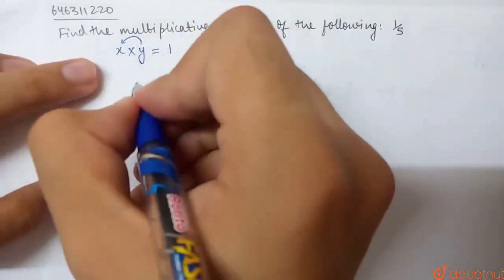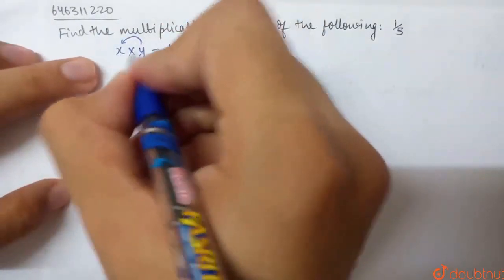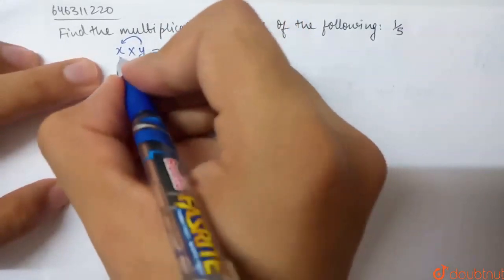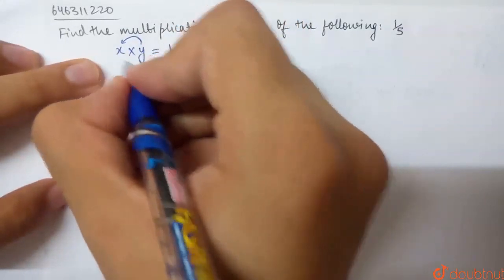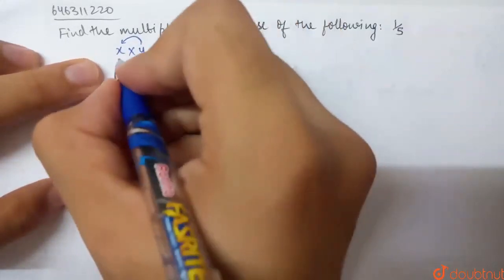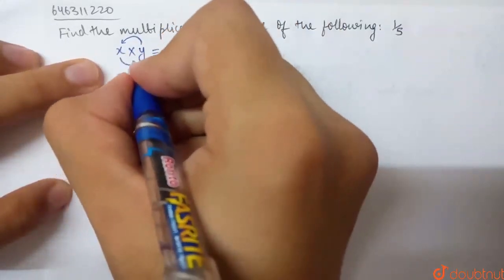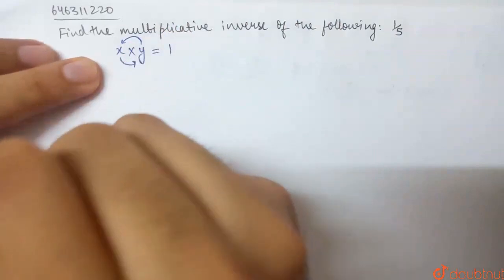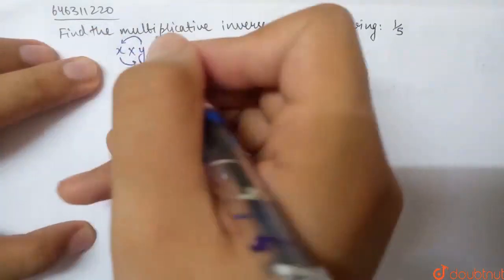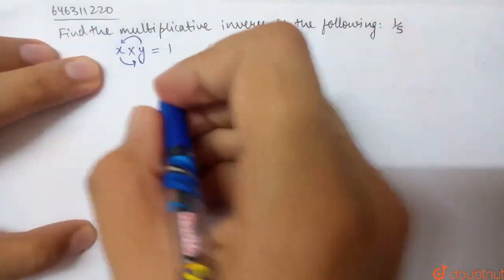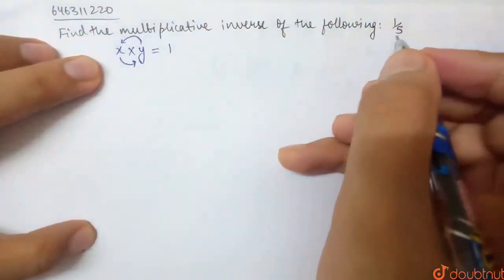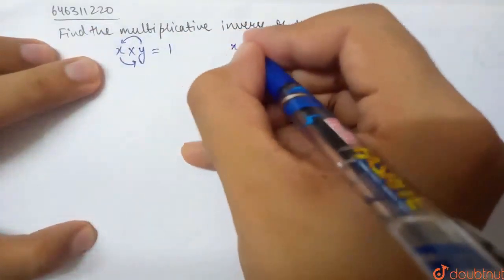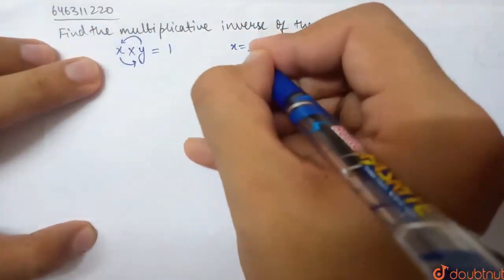Similarly, if y has a number x multiplied to it such that the result is 1, then x is the multiplicative inverse of y. So, we can use them interchangeably. Now, what is x here? x is 1 by 5.